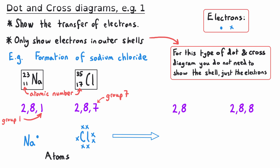We can show this in the dot and cross diagram: sodium now has no electrons in its outer shell, and chlorine has 8 electrons in its outer shell. The electron that chlorine gained is shown as a dot, while the original 7 electrons are shown as crosses. It's worth pointing out that there is no actual difference between the dots and crosses — they simply show which atom originally owned those electrons.